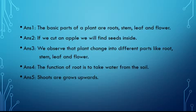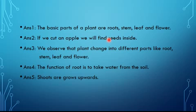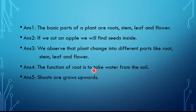These are the answers to the questions. Answer one: the basic parts of a plant are roots, stem, leaf, and flower. Answer two: if we cut an apple, we will find seeds inside. Answer three: we observe that a plant changes into different parts like root, stem, leaf, and flower. Answer four: the function of roots is to take water from the soil. Answer five: shoots grow upwards.